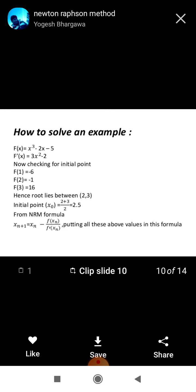Suppose, we have this polynomial and checking the initial point. f1 equals minus 6, f2 equals minus 1, f3 equals 16. Hence, root lies between 2 to 3.